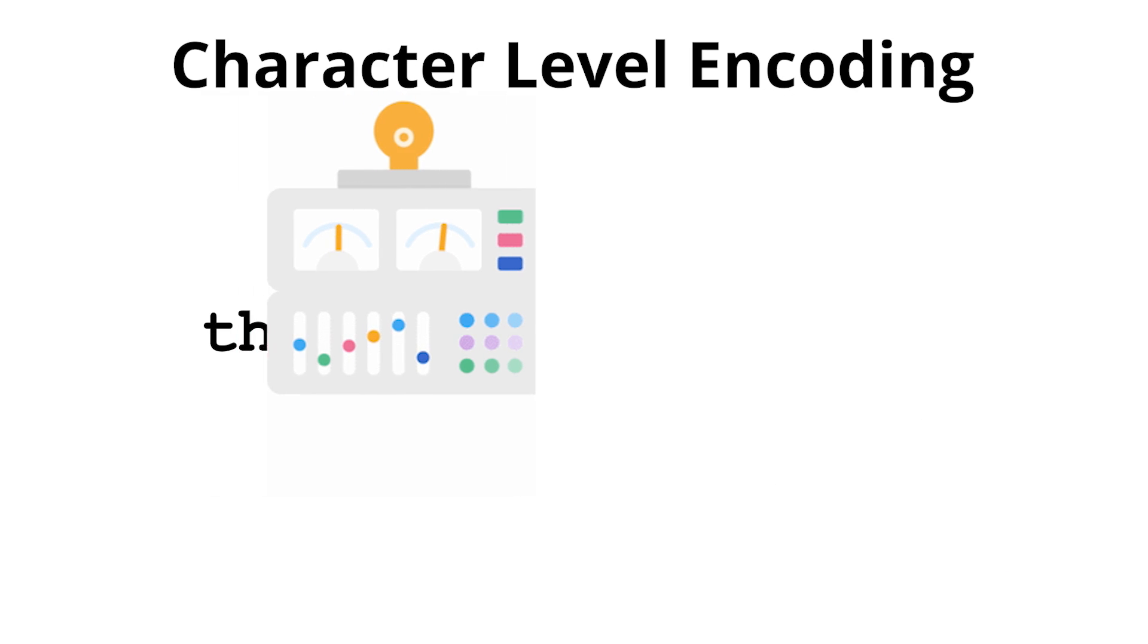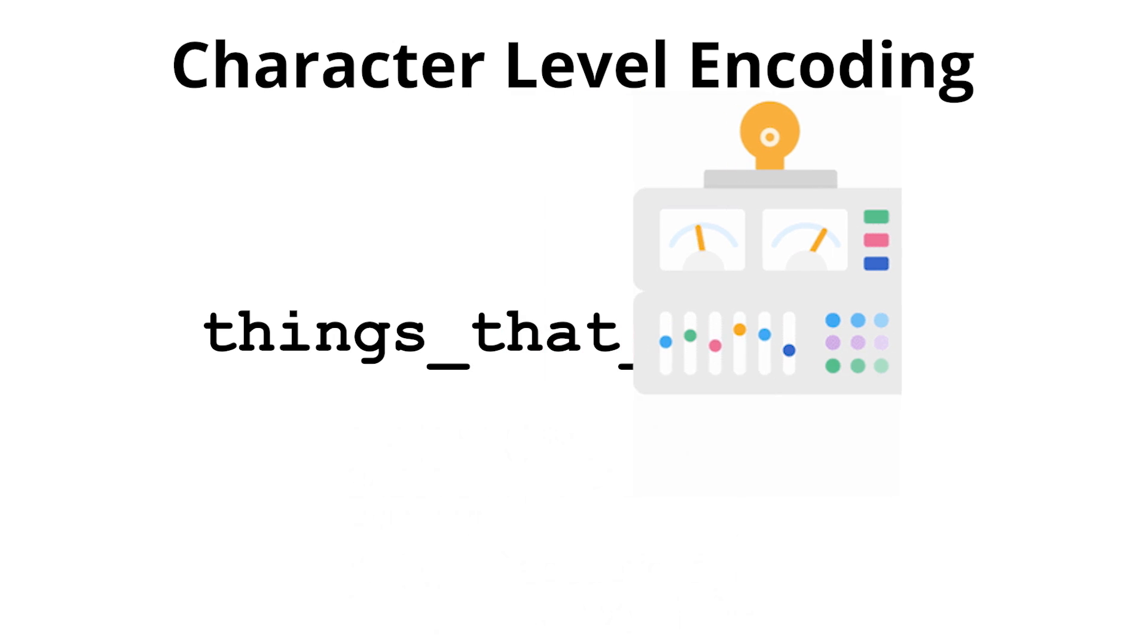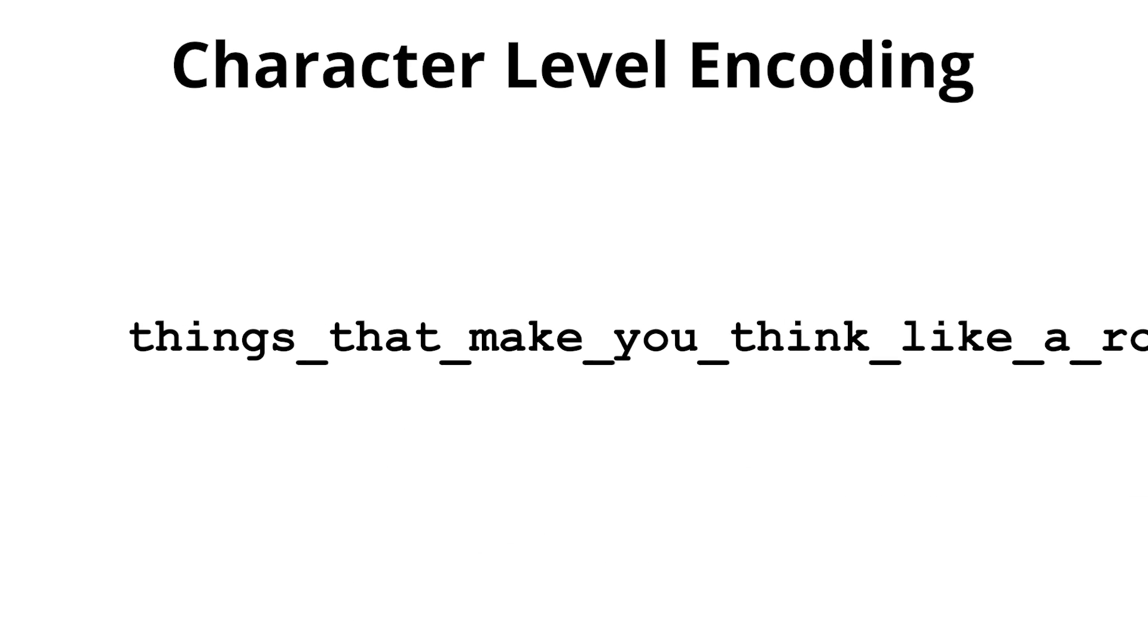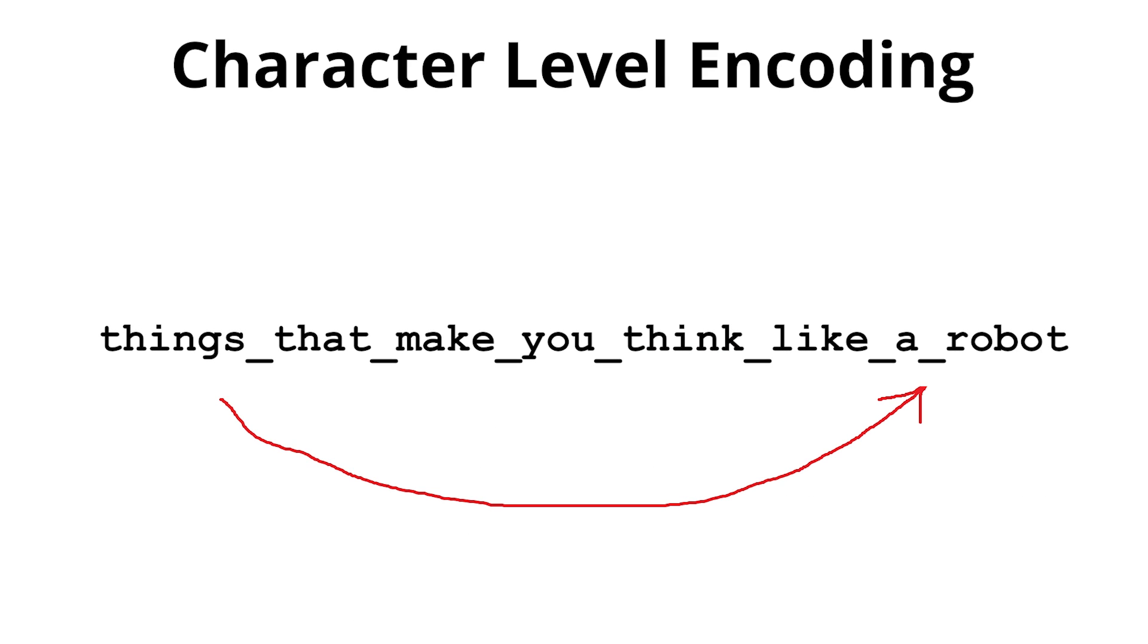At the character level, the network generates text one character at a time. It only has to choose between maybe 100-200 different letters and symbols, which keeps it small and memory efficient. But it's very difficult to build up sentence context from so many steps in the past to make good predictions in the future.